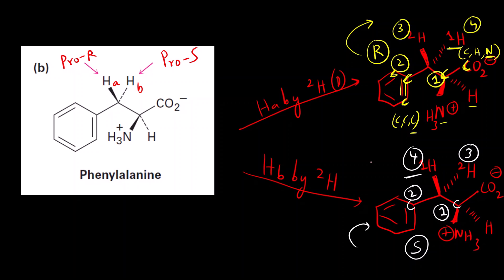So here we come to the end of today's video. I hope you have understood how to assign Pro R and Pro S notation and what is its application — to distinguish the similar atoms in a Pro Chiral Center, which is a center where the two groups are the same. Thank you so much.